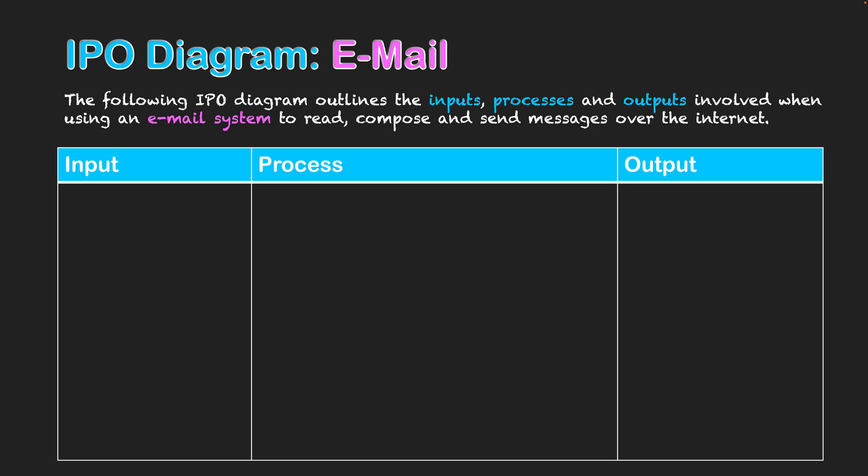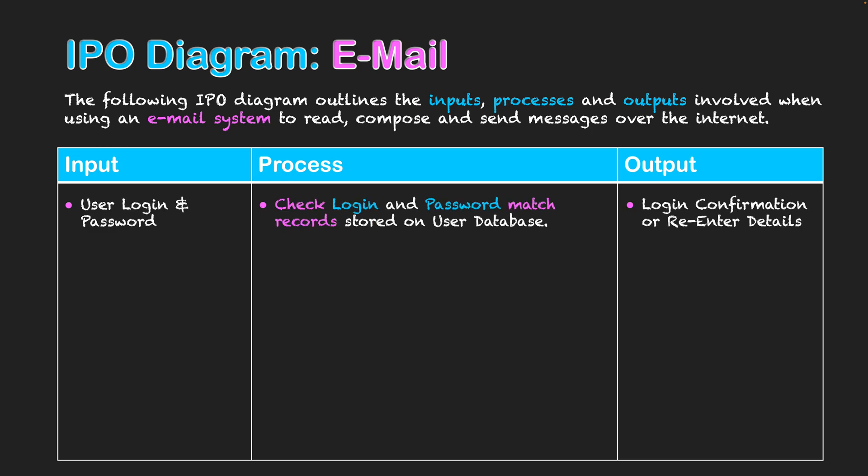The first thing that happens in the email system is you need to log in by entering your login and password. The system checks that the login and password match records stored on a user database, then outputs a confirmation that they are correct — or a message telling the user to re-enter their details because they don't match what's stored in the database.